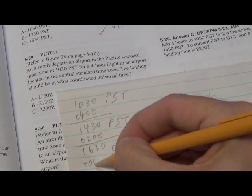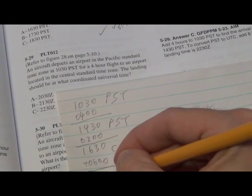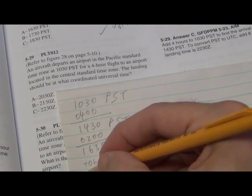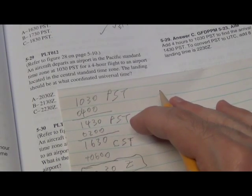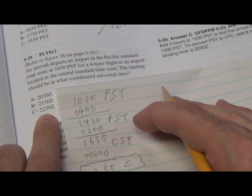So we add six hours. That's zero, three, twelve, two. And the answer is 2230 Zulu. Let's see if there's a choice here of 2230 Zulu. And there it is. Answer C, 2230 Zulu.